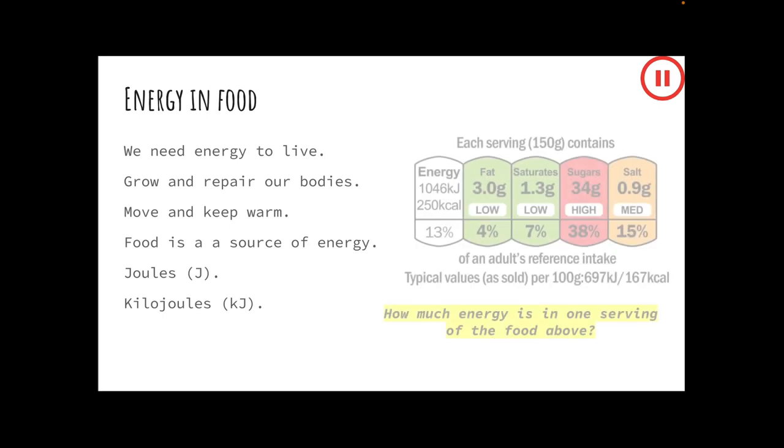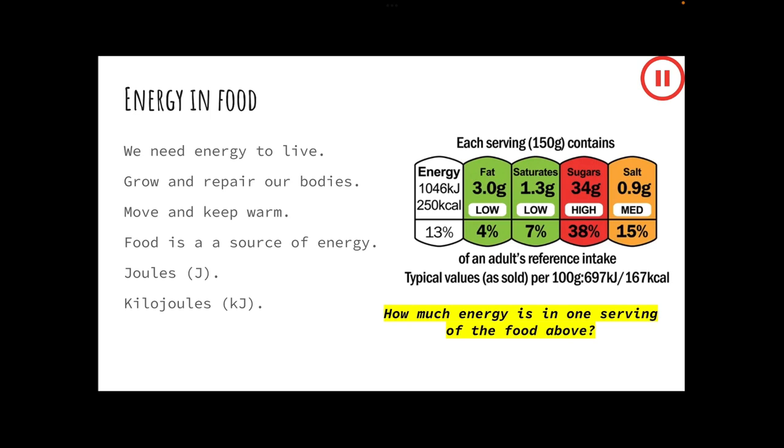We can calculate the amount of energy in food by looking at the nutritional information on food labels. Here is a food label for a mystery food. Each serving is 150 grams. In box number one, write down how much energy is in one serving of this food. Pause the video until you have your answer written down.